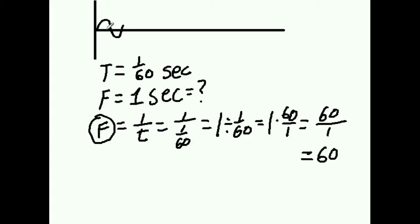So we'll get 60 of these waveforms, these cycles, per second. And that is the frequency: 60 cycles per second. We abbreviate this now by saying 60 hertz, 60 Hz.